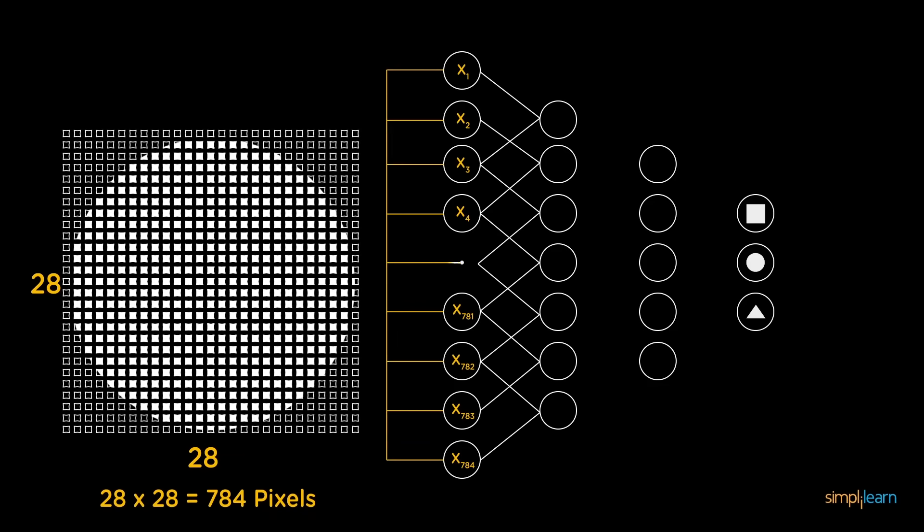Neurons of one layer are connected to neurons of the next layer through channels. Each of these channels is assigned a numerical value known as weight. The inputs are multiplied by the corresponding weights, and their sum is sent as input to the neurons in the hidden layer.